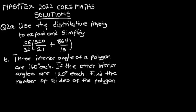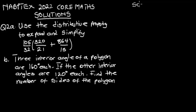Hello everyone, welcome to this channel. In this video I'm going to take you through NAPT 2022 core mathematics solutions to question number two. Part A reads: use the distributive property to expand and simplify this expression. Part B says: three interior angles of a polygon are 160 degrees each; if the other interior angles are 120 degrees each, find the number of sides of the polygon.